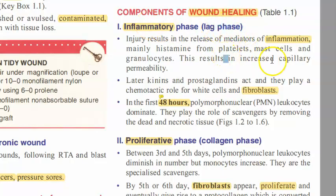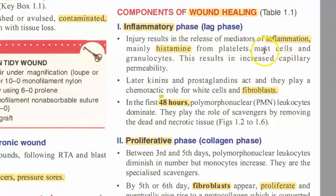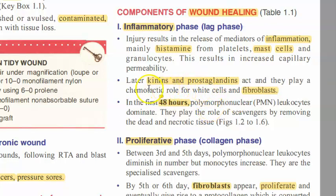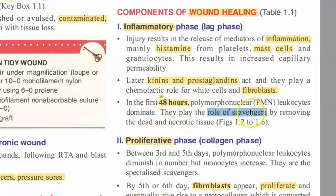In the inflammatory phase there will be a release of mediators of inflammation — histamine, mast cells, granulocytes. Later, kinins and prostaglandins come. They will attract white cells and fibroblasts, playing a chemotactic role. In the first 48 hours, neutrophils dominate. They play a role of scavengers by removing dead and necrotic tissue.